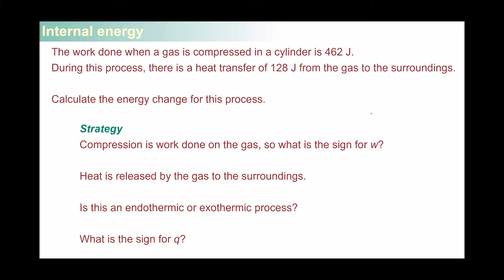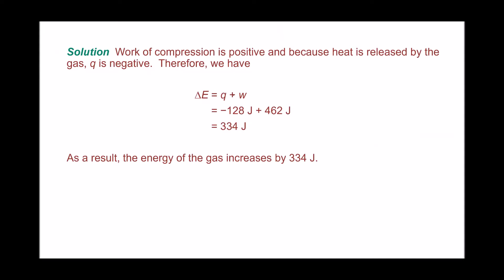You have a gas sample compressed in a cylinder and the work done during the compression is 462 joules. The heat transfer is 128 joules from the gas to the surroundings. The wording of the problem tells you the sign for both quantities. Compression is work done on the gas — you add energy onto the gas, so the sign of W is positive. Heat is released from the gas to the surroundings, making it an exothermic process, so the sign of Q is negative. You calculate the sum Q plus W, taking into account the sign of each.